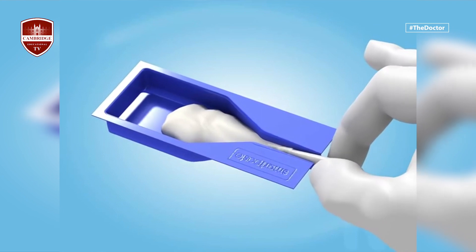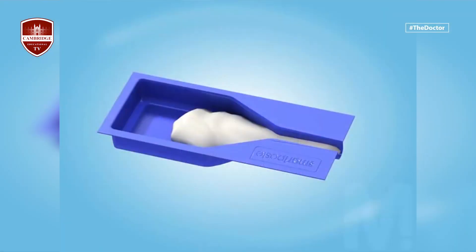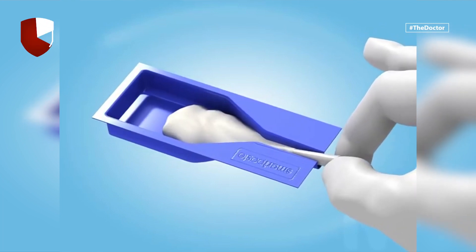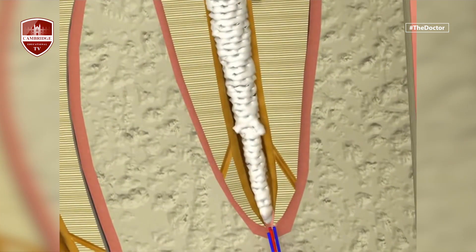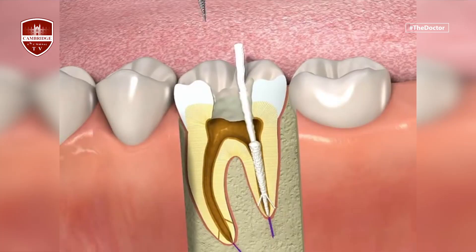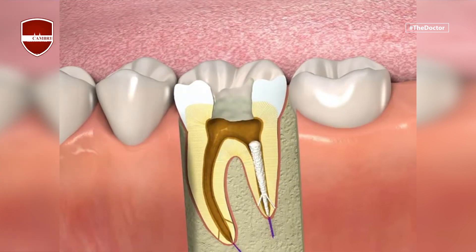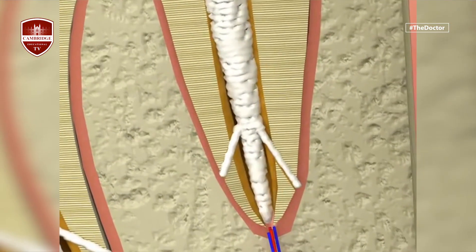Now, the fourth step: shaping the canal and removing all infected pulp. This can be done manually or with a machine. For the manual technique, I use files — inserting them into the root canal and removing all infected tissue around the canal walls, similar to a trimming action.